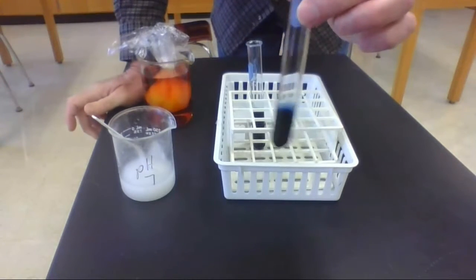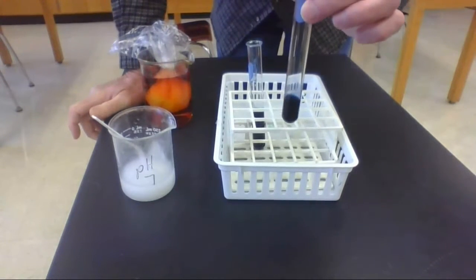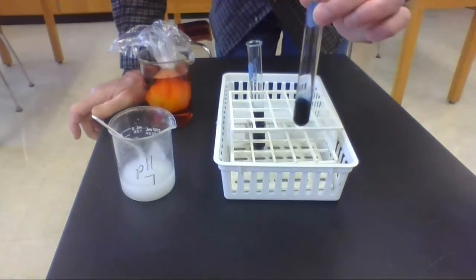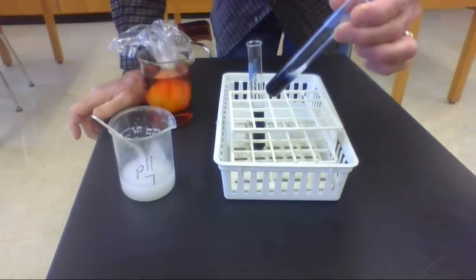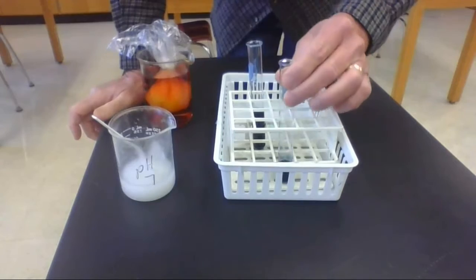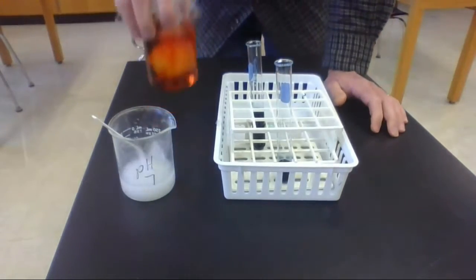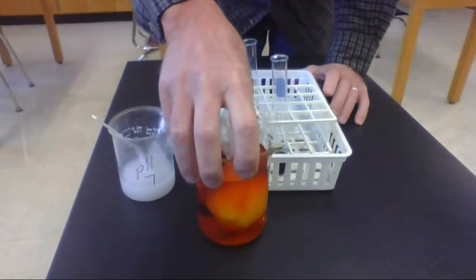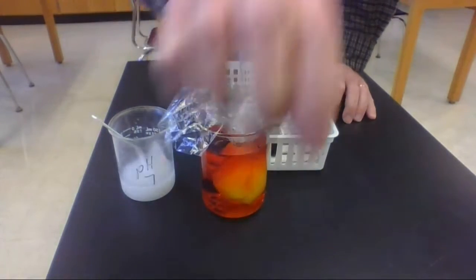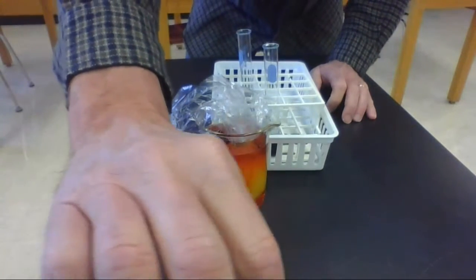So whenever starch and iodine meet each other, they actually have a chemical reaction, and the solution will turn a dark blue to almost a black color. That'll be a hint for what we see in our experiment next. See you in 24 hours.